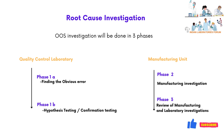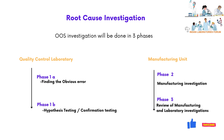Out-of-specification investigation will be done in three phases. Phase 1a is done to find out the obvious error, and Phase 1b is hypothesis testing or confirmation testing to find out the root cause. Both Phase 1a and Phase 1b will be performed at the laboratory. Phase 2 investigation will be performed at the manufacturing unit to find out manufacturing errors resulting in OOS results. Phase 3 investigation will be done by reviewing both laboratory and manufacturing investigation records.